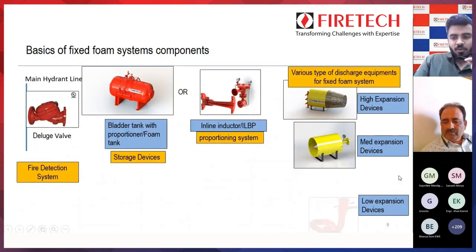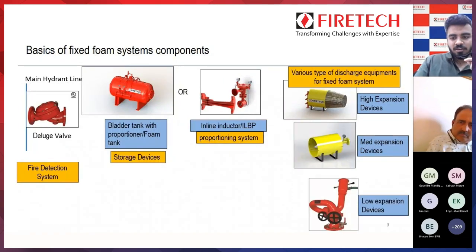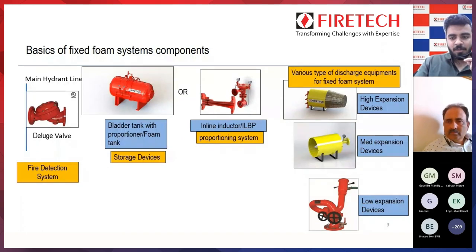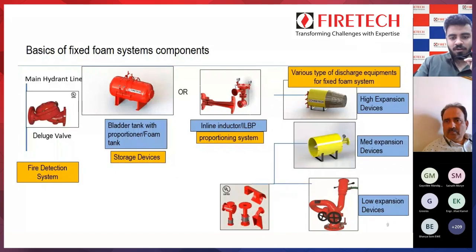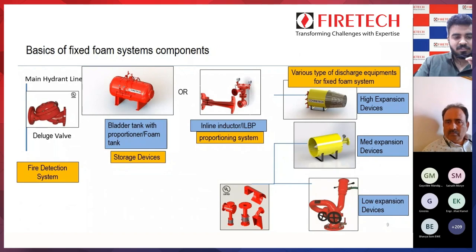Third is the low expansion devices — your foam monitors, that is water-foam monitors, which are used for secondary fire protection. Your foam chambers or makers are used for storage tank protection as primary devices. So detection device, storage device, proportioning device, and discharge devices — these are the four types of devices required for your fixed foam system.